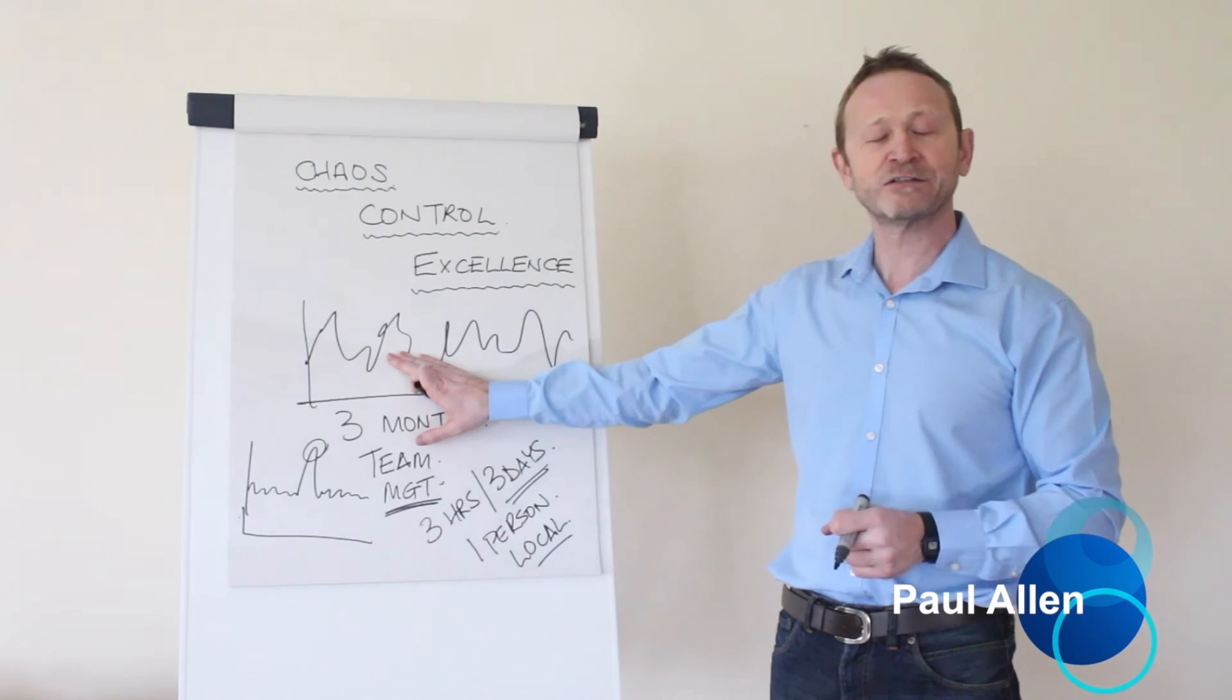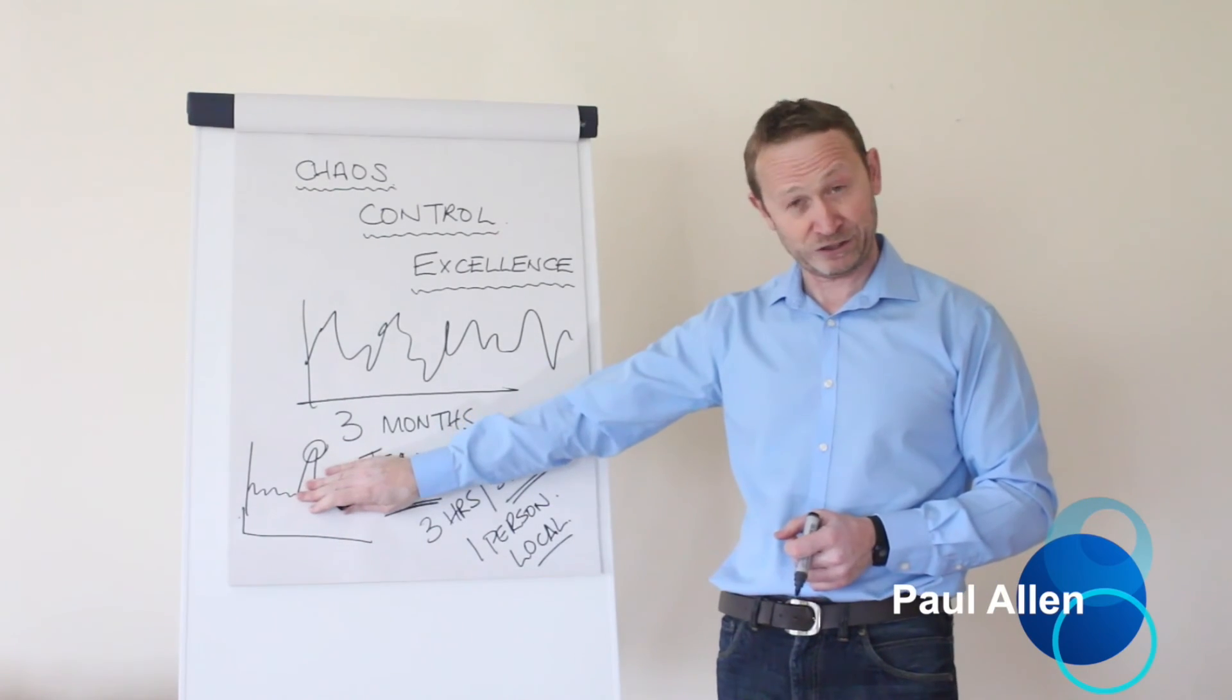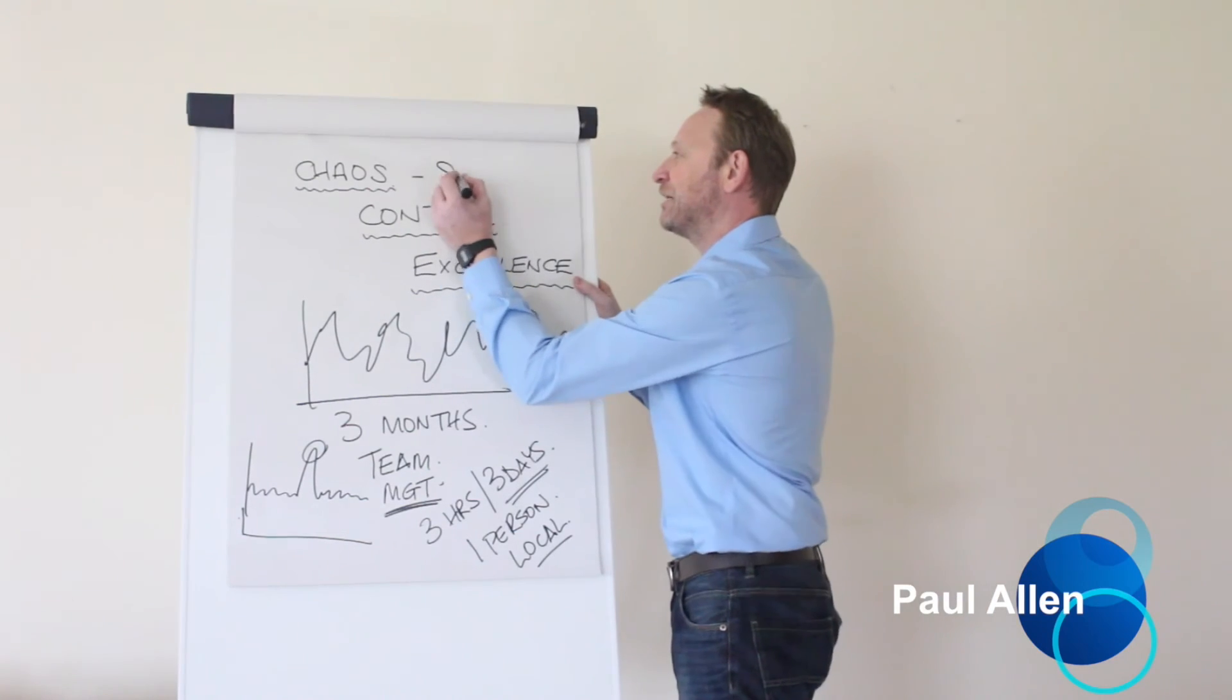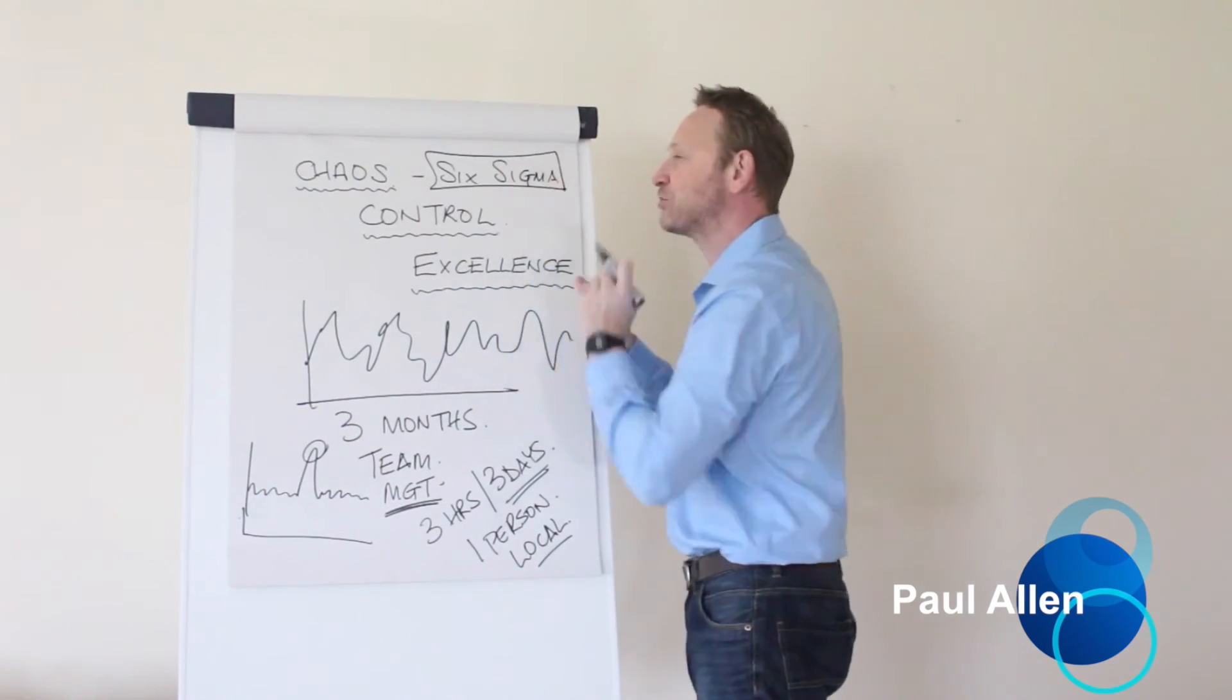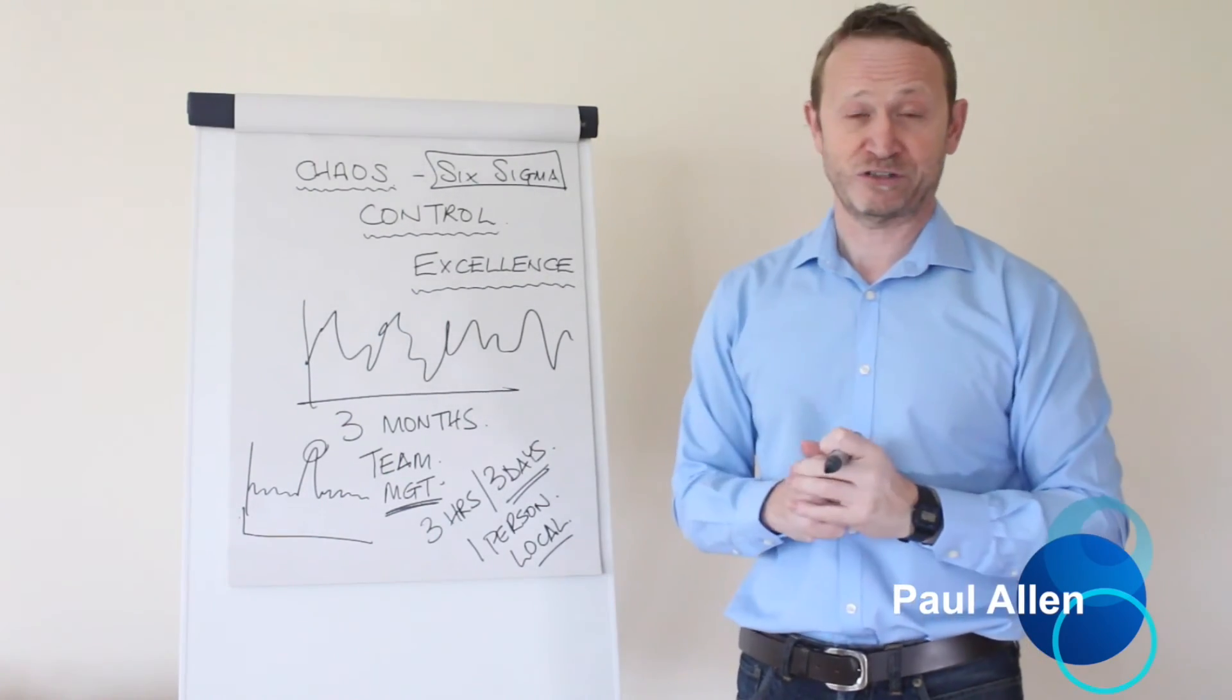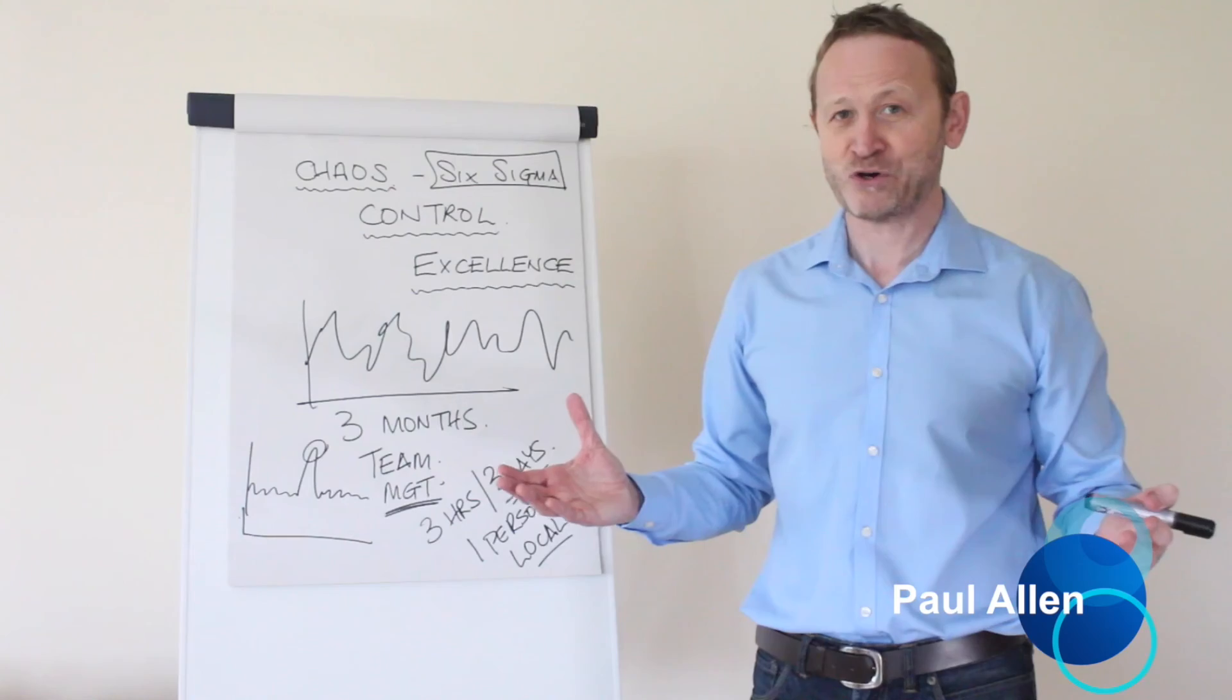Chaos, on the other hand, three months to take a process of chaos. So control and excellence typically look like this problem and are very quick to fix. Chaos, on the other hand, and this is typically your Six Sigma project. Here's where you want your specialists to work. Here's where your black belts and your green belts work. They are going to turn chaos into control. They are going to take three months to do it and they need a team and they need a project.